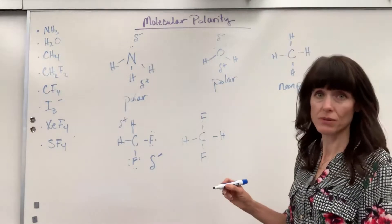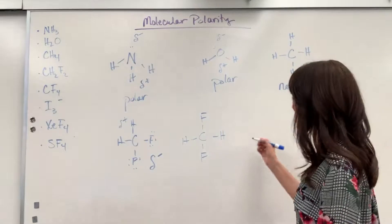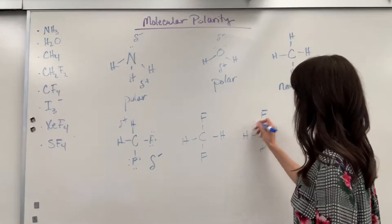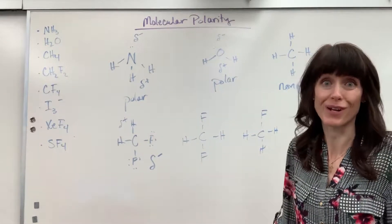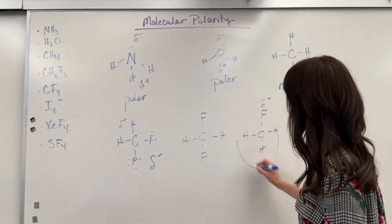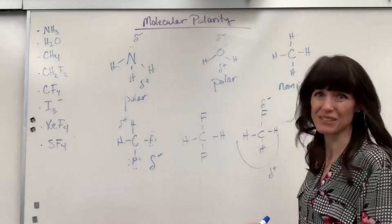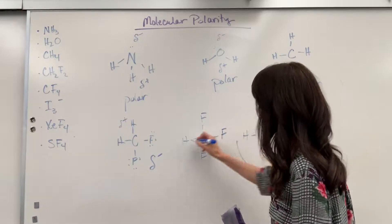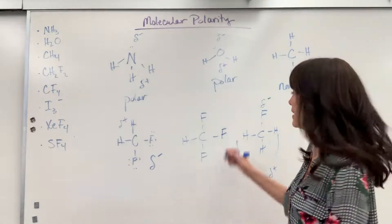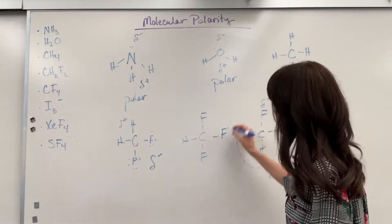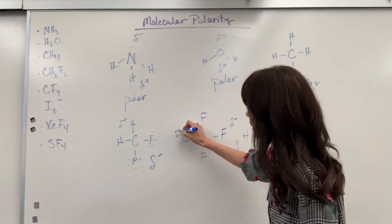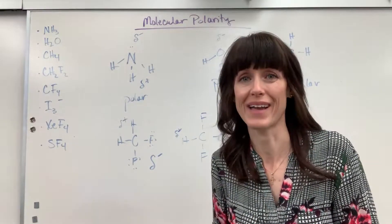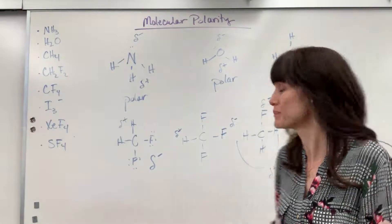If you had only one fluorine, it's still a polar molecule because they're not all the same — partial negative on the fluorine side, partial positive on the other three. And if you had three fluorines and only one hydrogen, still a polar molecule: those three fluorines give the partial negative and the hydrogen has the partial positive. If they're not all the same atom around that central atom, it's going to be polar.